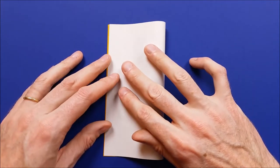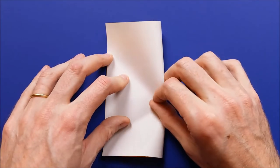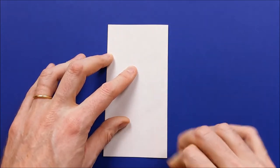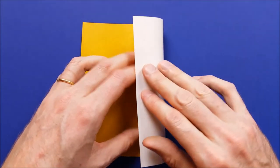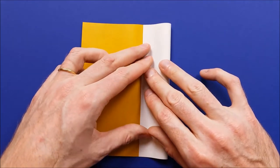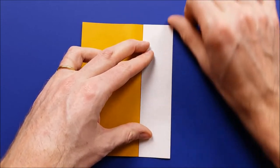First, fold the square vertically. Mark the fold and unfold. Then bring the two edges to the crease line. Mark the fold and keep it folded.